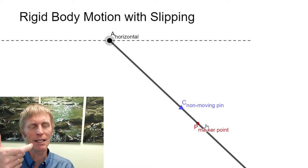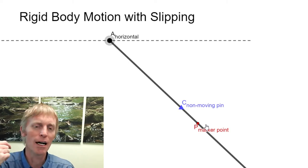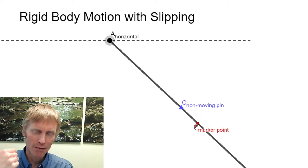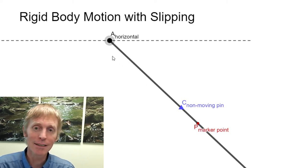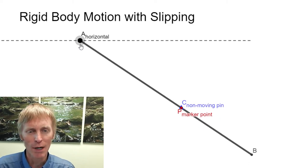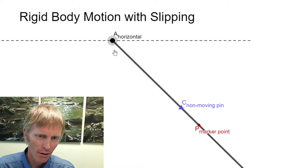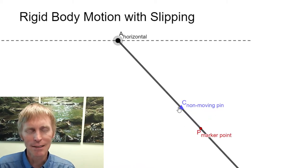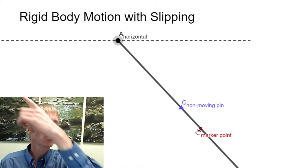Now if we flip that around and look at it the other way, the velocity of C relative to P. C isn't moving but P is. And so as we move from our original position right here going over in this direction, we can see that C is moving relative to P up towards point A.